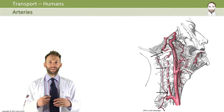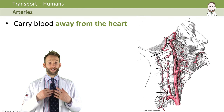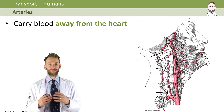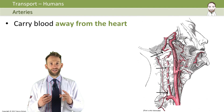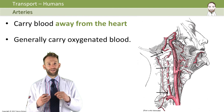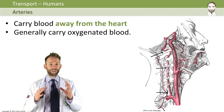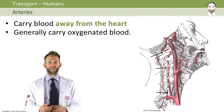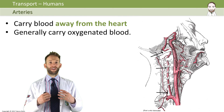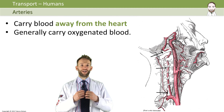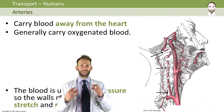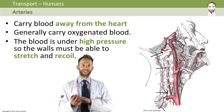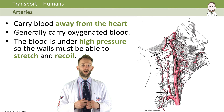Arteries carry blood away from the heart to the organs. They tend to carry oxygenated blood, but that's not a good definition because there is one artery, the pulmonary artery, which doesn't carry oxygenated blood. A definition that does work is that they carry blood away from the heart. The blood is under really high pressure because it has just been pumped by the heart, so the artery walls need to be able to stretch with that pressure and recoil — that's what gives you a pulse.